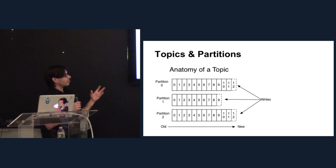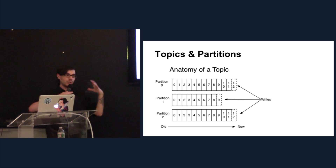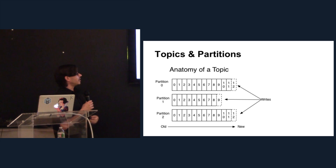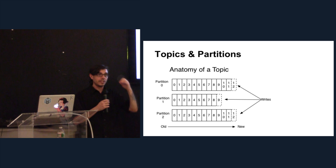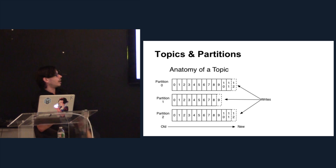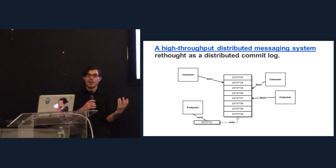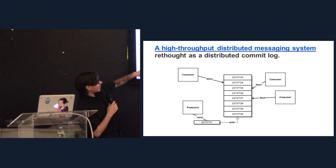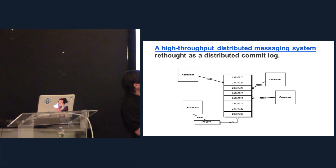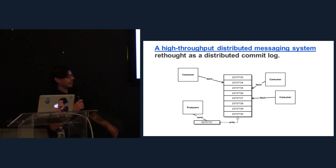The structure, besides producers, consumers, and brokers, is built around the topic — a virtual structure of partitions. Partitions are actually log files, literally log files on disk, and you basically write to these partitions. They're all sequential writes, and Kafka guarantees ordering on a partition basis. As you write, messages are continually appended to the end of the partition log. Kafka is a high-throughput distributed messaging system, thought of as a commit log. Consumers come in and fetch at different points in the commit log, while producers are writing to the end of the commit log.